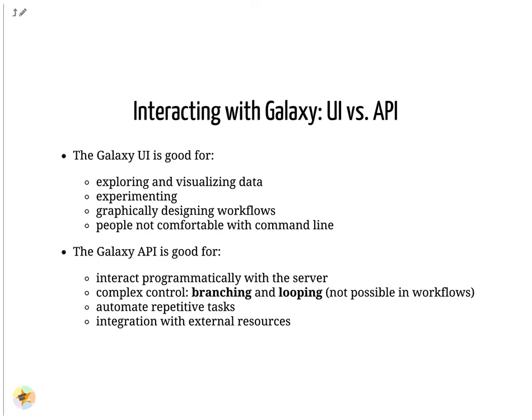The Galaxy user interface is a better choice for explorative analysis, visualizing data and drawing workflows. The API instead allows you to automate tasks using Galaxy's capabilities programmatically. A typical use case is to upload FASTQ files as soon as your sequencer finishes writing them and running a quality control workflow. Importantly, however you interact with Galaxy, you can equally benefit from features like reproducibility of the analysis and data sharing. In fact, all the work done via the API is still accessible when you return to the UI.